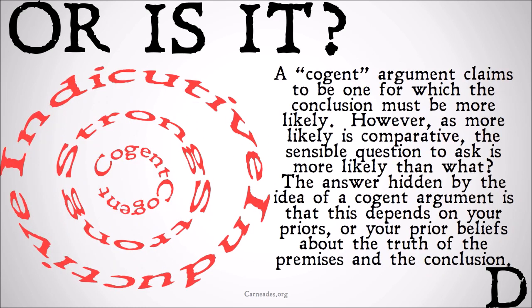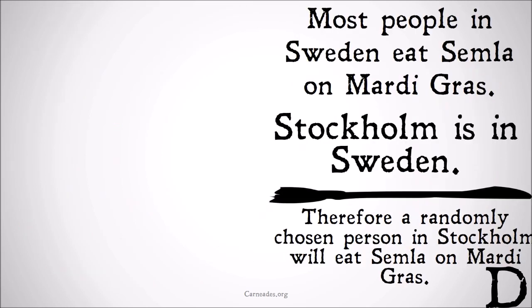A cogent argument claims to be one for which the conclusion must be more likely because the premises are true. For a cogent argument, your premises have to be true, and the truth of the premises guarantees that the conclusion is more likely. However, 'more likely' is comparative — the sensible question to ask, just as with strong arguments, is: more likely than what? The answer hidden by the idea of a cogent or strong argument is that this depends on your priors, or your prior beliefs about the truth of the premises and the conclusion.